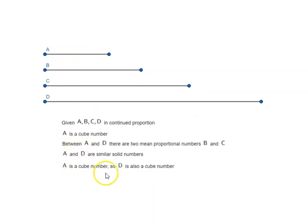So A is a cube number, so D is also a cube number. So that is proposition number 23 of book 8 of Euclid's elements.